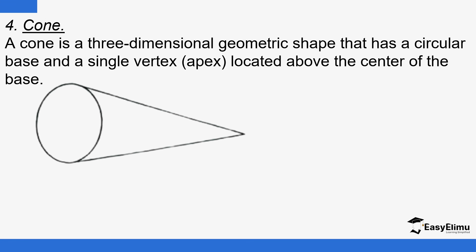We have a cone. It has a circular base and a single vertex. The top point is called the apex. A cone is drawn with a circular base at the bottom and one single vertex at the top — it has only one vertex.